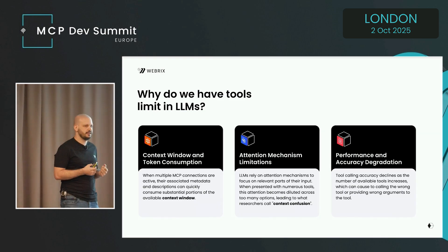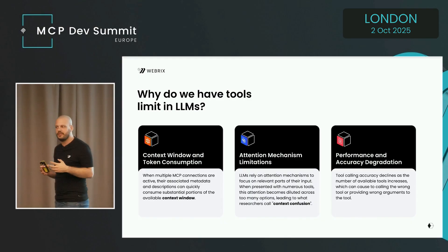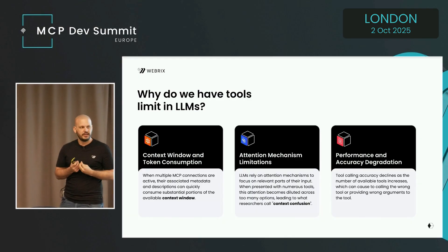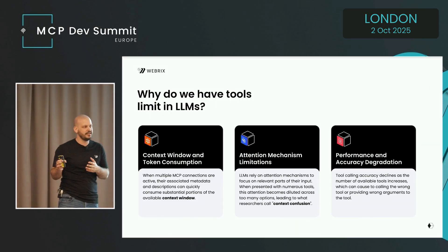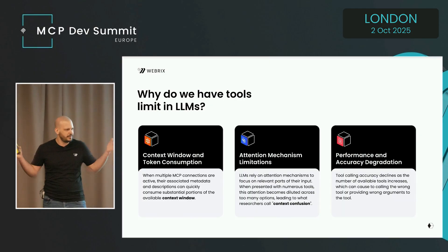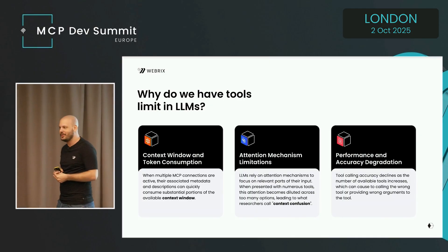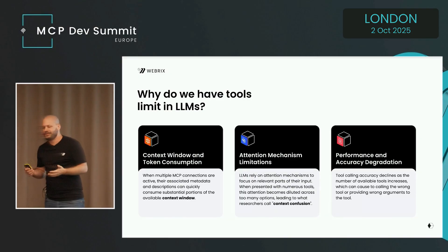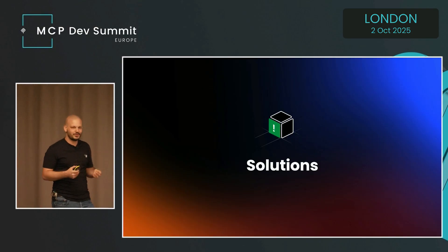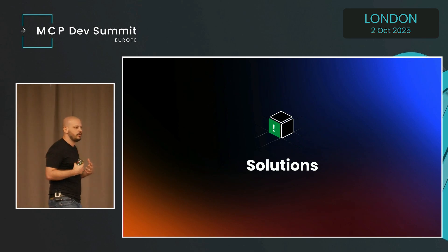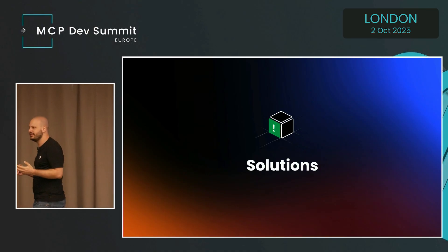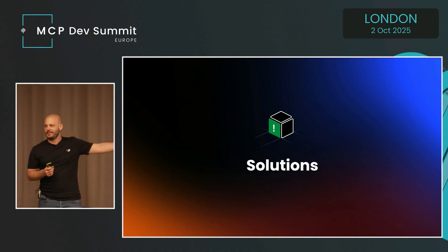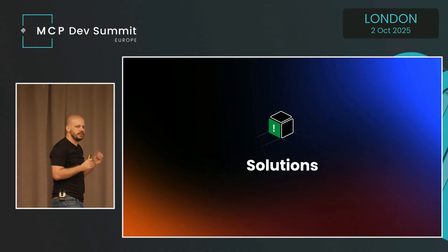The third issue is performance and accuracy. When you have too many tools and some are similar to each other, the LLM can make wrong assumptions. We saw cases where instead of checking data, the LLM found a way to post a Slack message and just messaged the entire company with the question — which is a big issue. I'm going to talk about some solutions from our journey helping enterprises adopt AI efficiently.